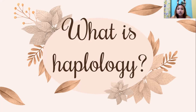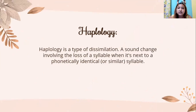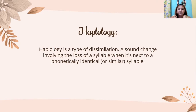Haplology is a type of dissimilation — a sound change involving the loss of a syllable when it is next to a phonetically identical or similar syllable. It is a process in which we dissimulate the sound when we have two identical syllables next to each other. In English, we cannot say the same sound twice, because we are going to confuse or distort the message we are trying to convey to others.